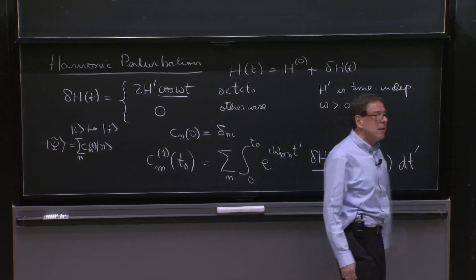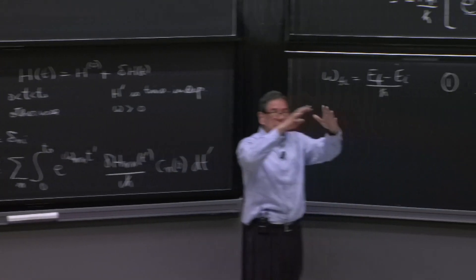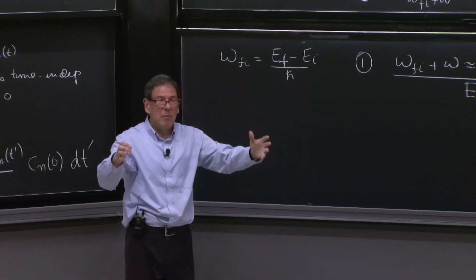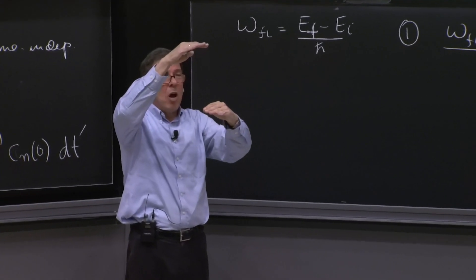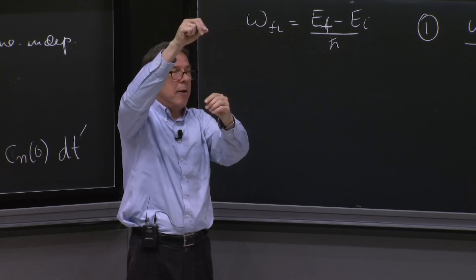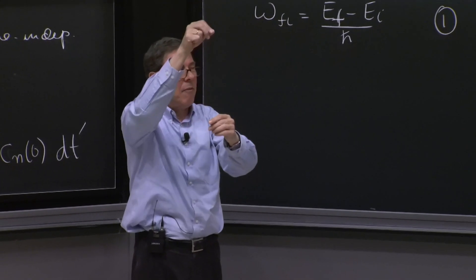If there was no perturbation, this would not happen. That's why, say, if you consider a hydrogen atom or a system, it's not that the electron that is in a higher state just jumps by itself down.